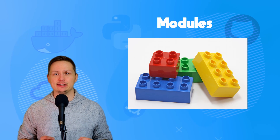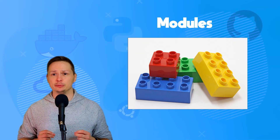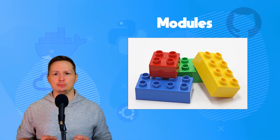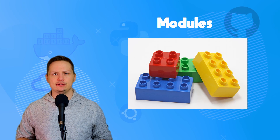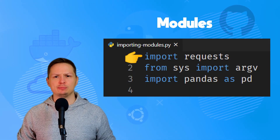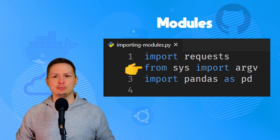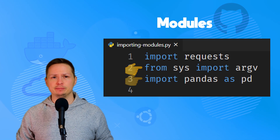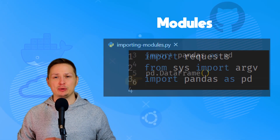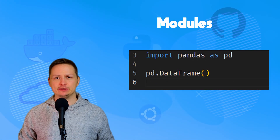Modules contain powerful Python functions we can use as building blocks in our scripts. To access them, type 'import' and then the module name. If you only want a specific function of a module, you can import just that. You can also import with an alias — for example, importing pandas as 'pd' so you can reference it as 'pd' instead of 'pandas' throughout your code.